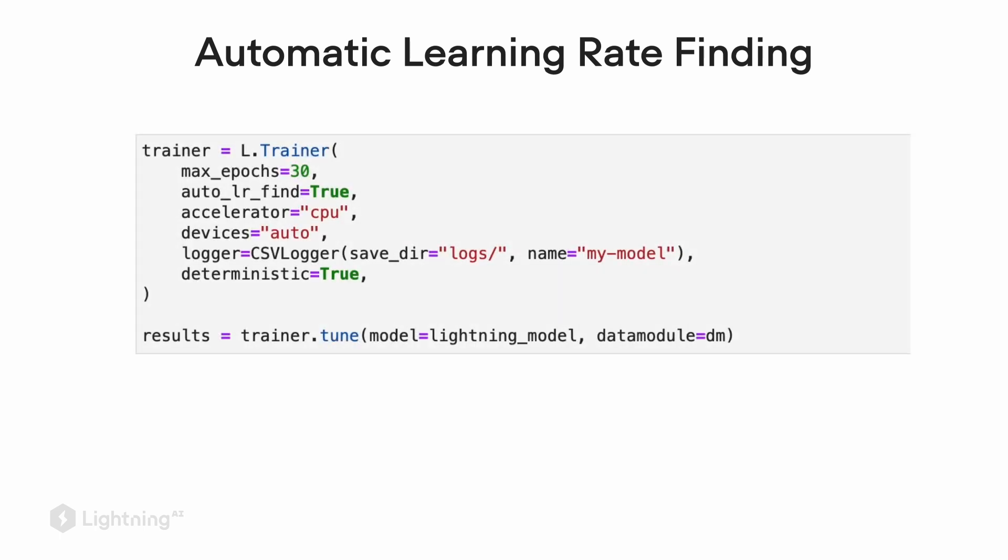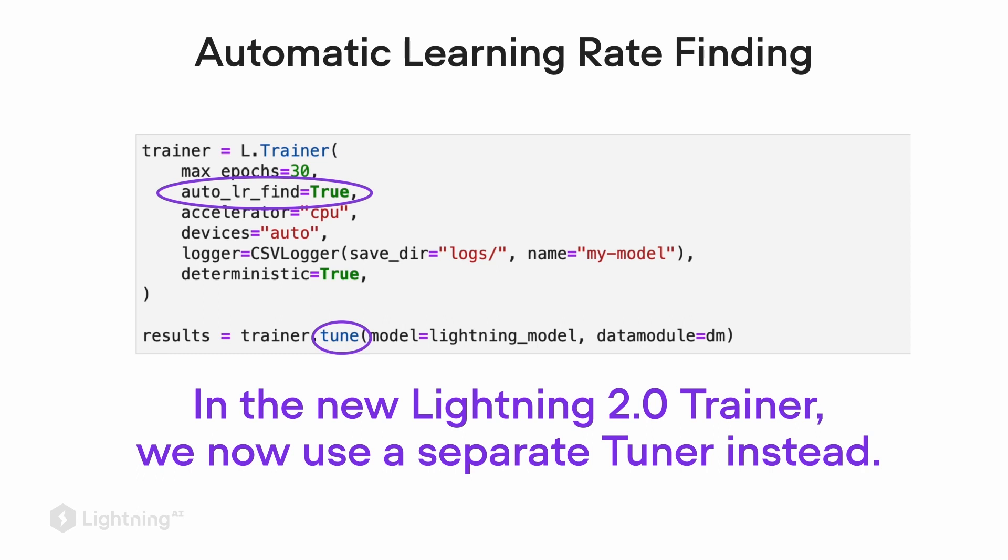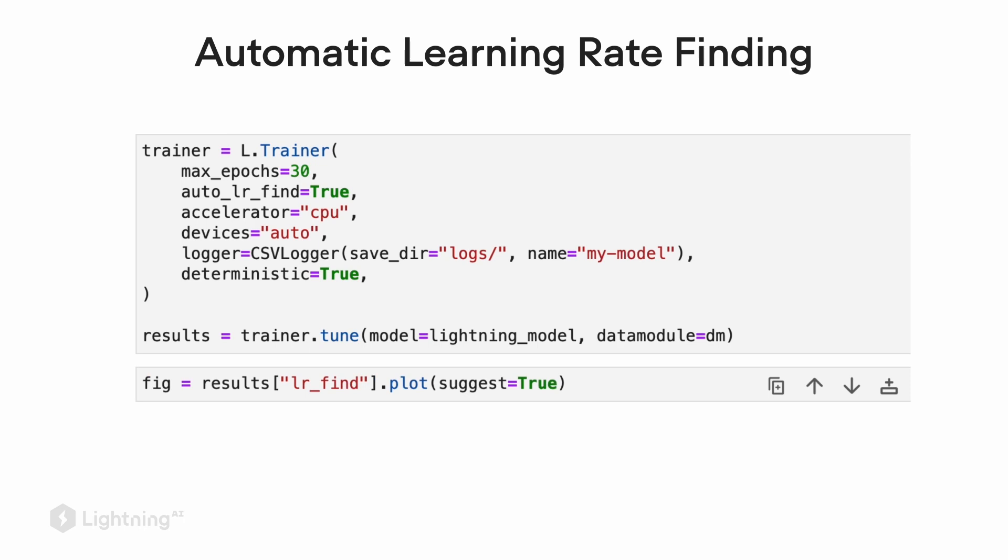How can we use this automatic learning rate finding algorithm in Lightning? There is an auto_lr_find setting in the trainer that we can set to true. Then we can say trainer.tune to automatically find the learning rate. This should be rather quick because it's only using a smaller data subset for a few number of steps. Then we can visualize the learning rate that it found using the plot method.